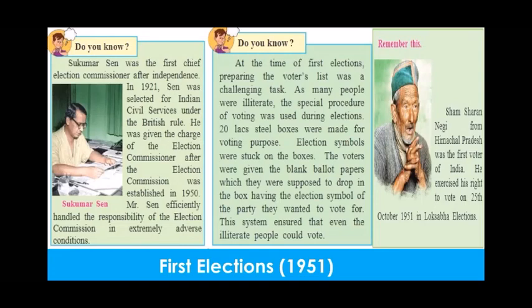After independence, the first elections were held in the year 1951. Sukumar Sen was the first Chief Election Commissioner. Before being appointed, he was serving in the Indian Civil Services.